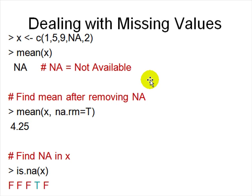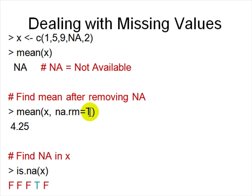Dealing with missing values is a big part of R — much harder in Excel. If you have a vector x with an NA and try to take the mean, it returns NA. You need to tell the mean function 'na.rm = TRUE' — remove all NAs — and then it gives you the correct mean. You can find NAs in x by typing 'is.na(x)', which shows you where the NA is.